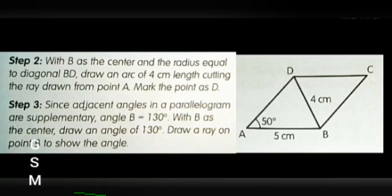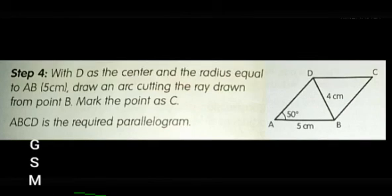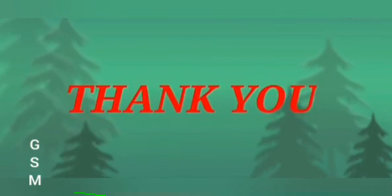Step 3: Since adjacent angles in the parallelogram are supplementary, angle B equals 130 degrees. Draw a ray on point B to show the angle. Step 4: With D as center and radius equal to AB, 5 cm, draw an arc cutting the ray drawn from point B. Mark the point as C. Hence ABCD is the required parallelogram. Thank you.